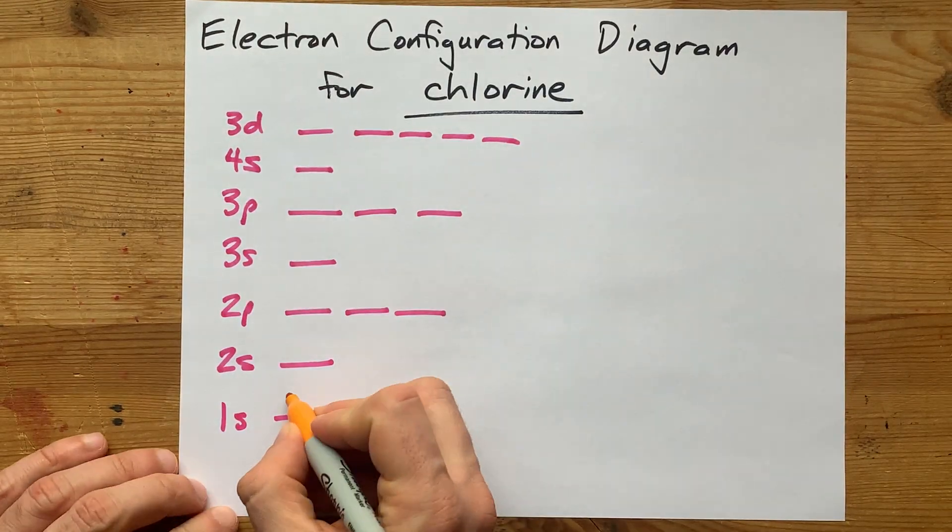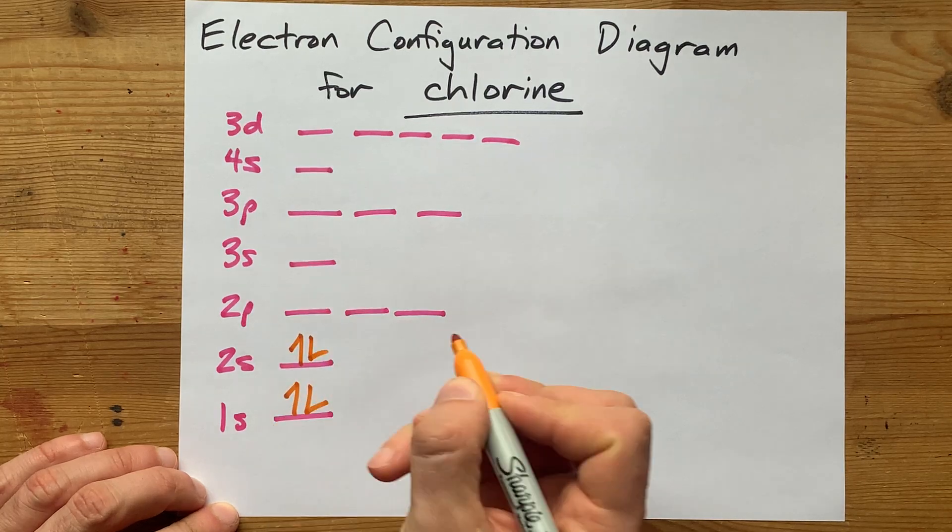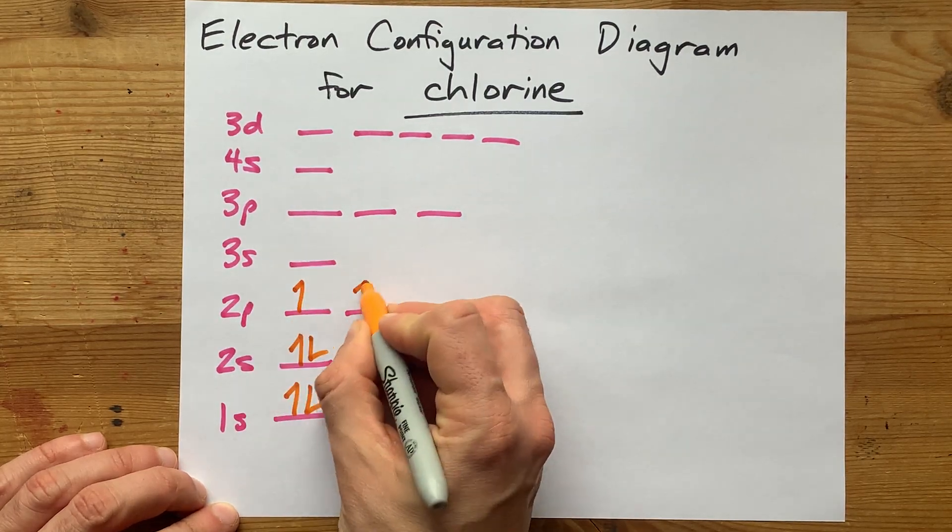So let's go. 1, 2 electrons, 3, 4, 5, 6, 7.